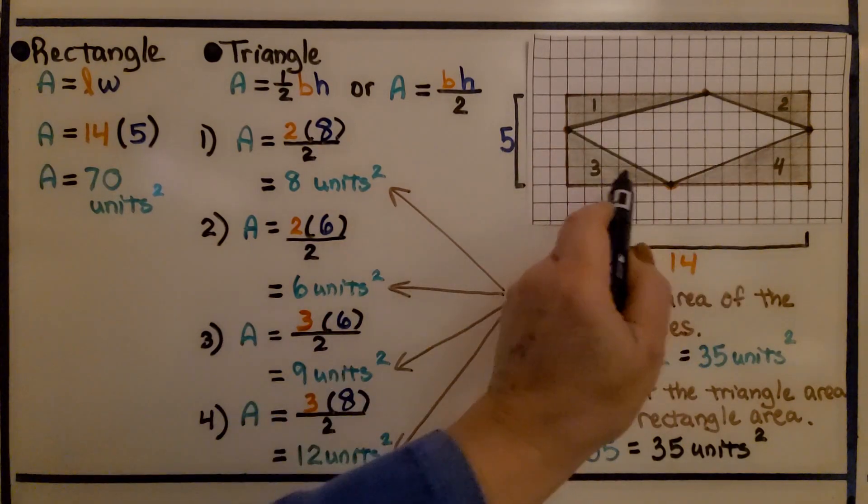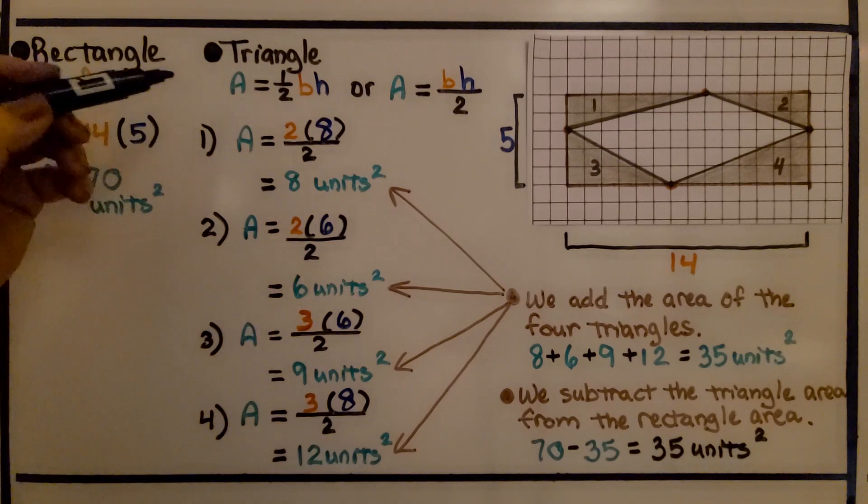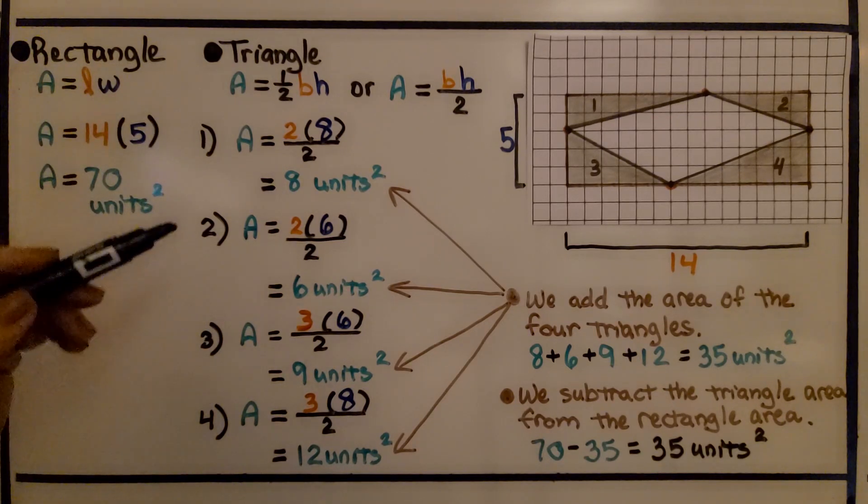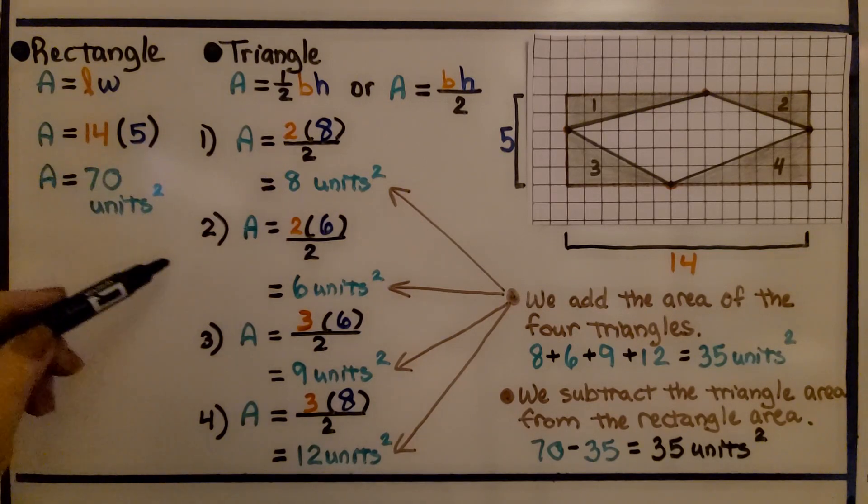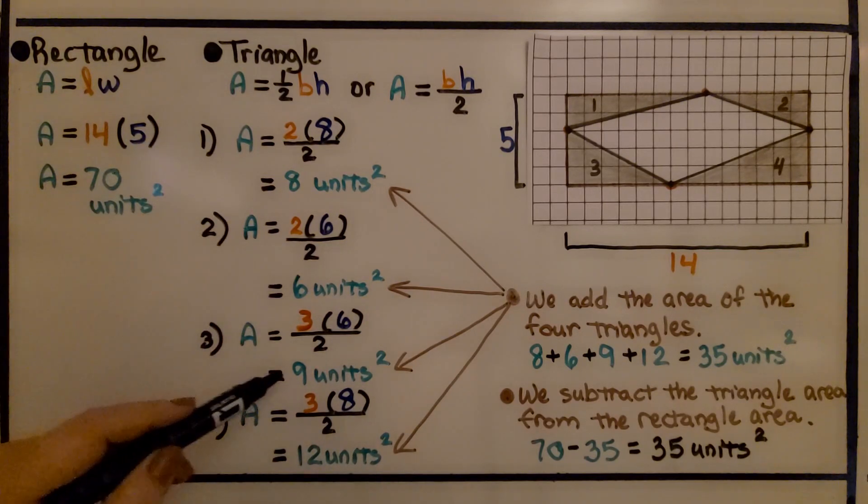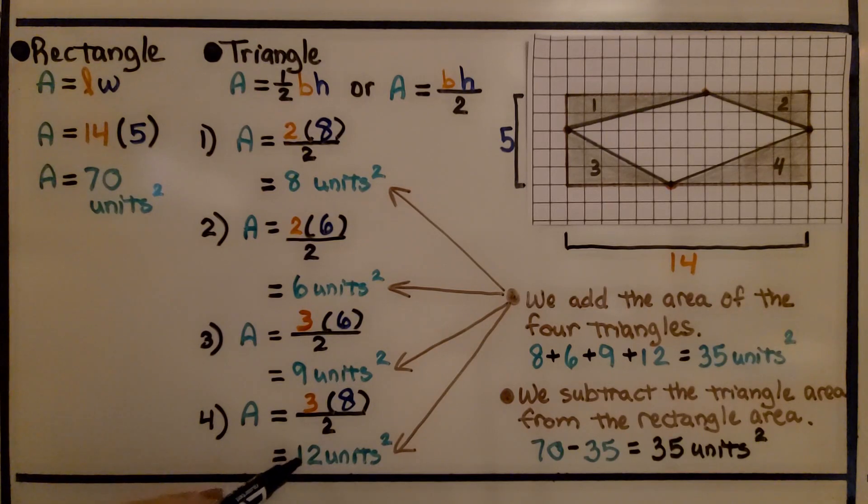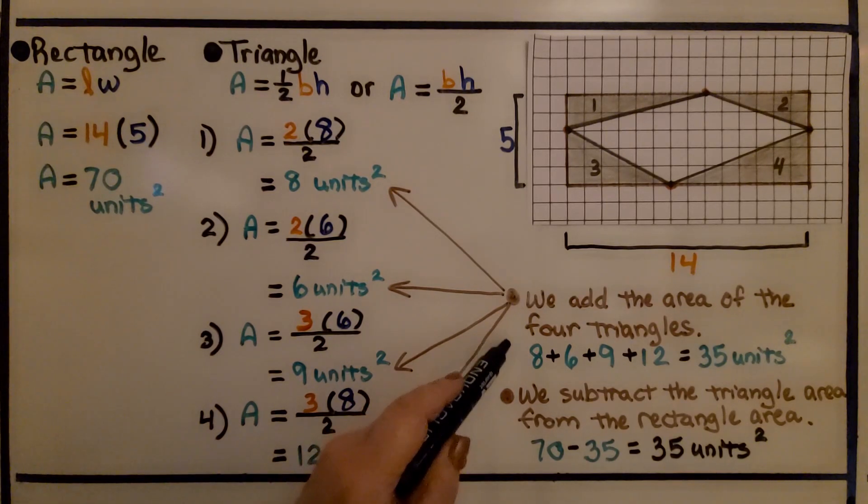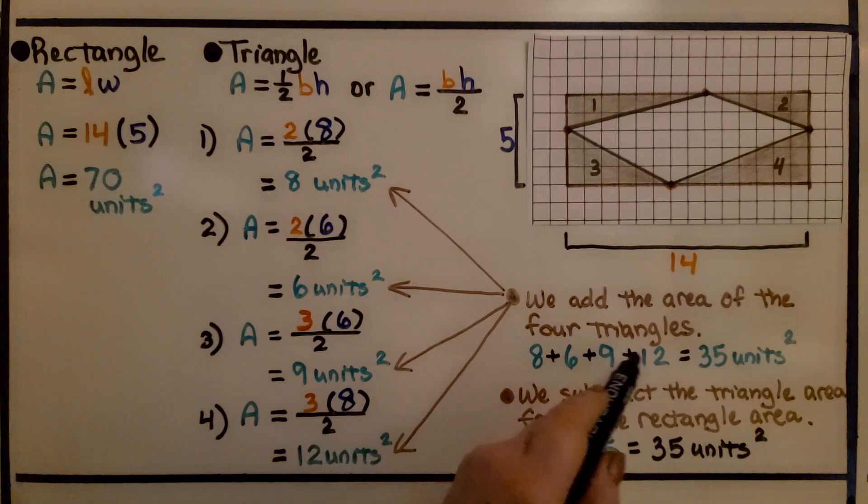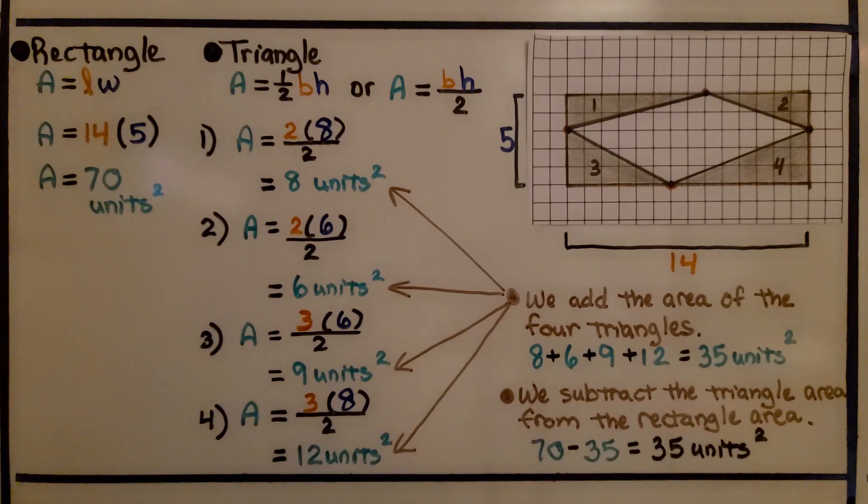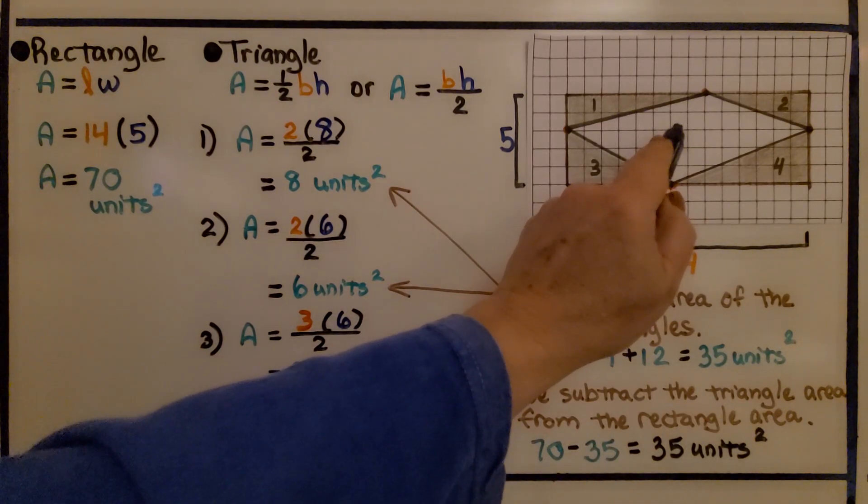So we have triangle 1, 2, 3, and 4. We do each one. And we find triangle 1 is 8 units. Triangle 2 is 6 units. Triangle 3 is 9 units. And triangle 4 is 12 units. We add the area of the four triangles. 8 plus 6 plus 9 plus 12 is equal to 35 units square. Now we subtract that triangle area, the 35, from the rectangle area, 70. 70 minus 35 is equal to 35 units square for this shape on the inside, for this figure.